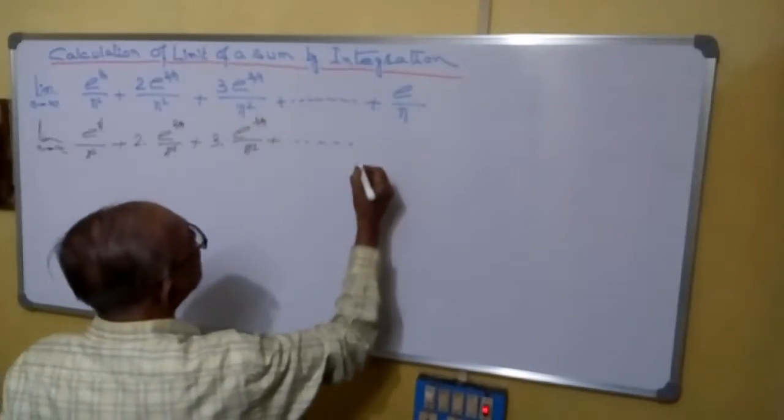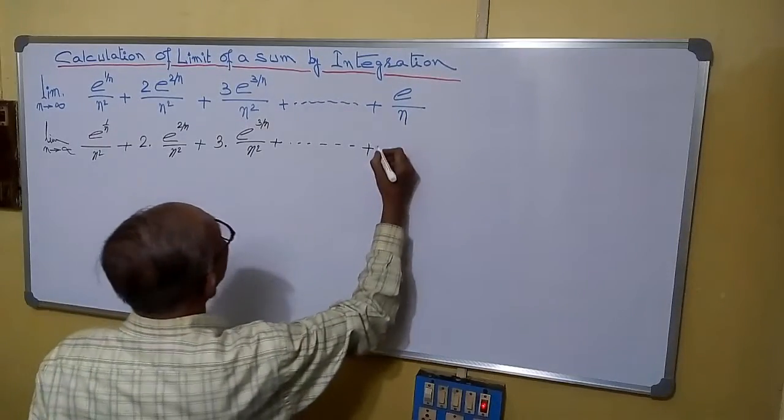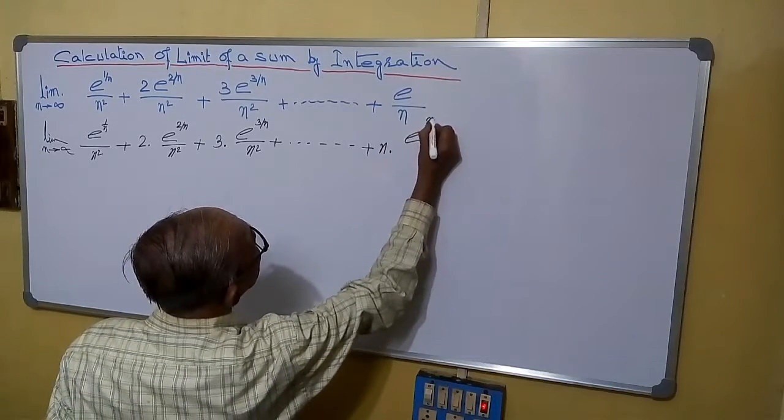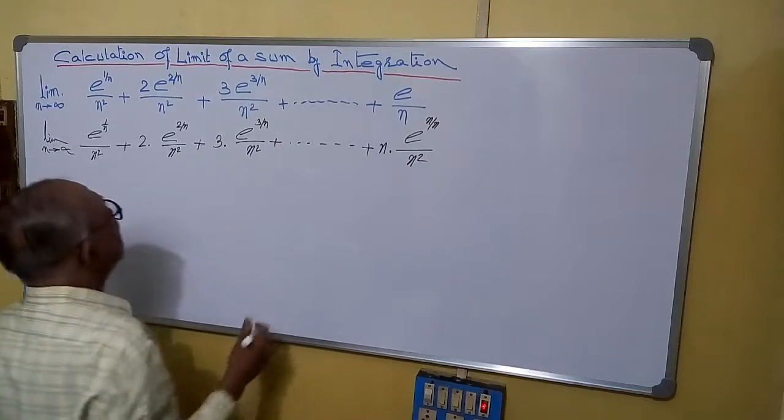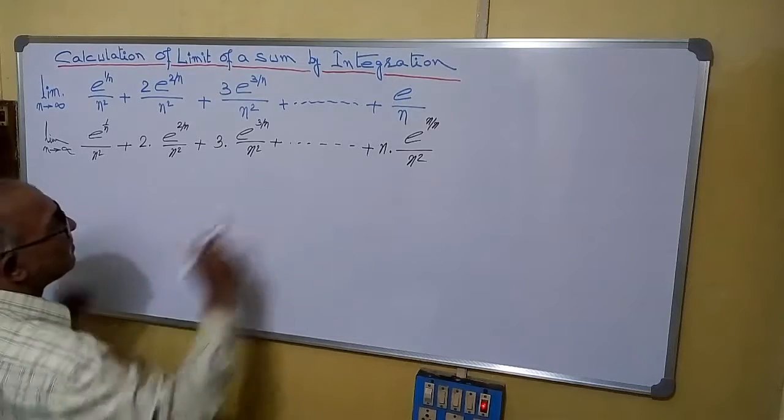But this one is not matching. So you have to match with the same style. So you can write n·e^(n/n)/n^2. Now it is matching with all these things. First step, you have to match the things.